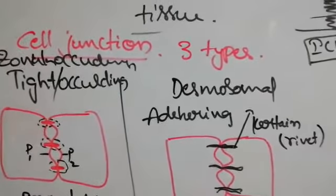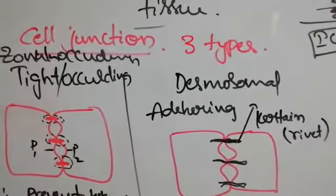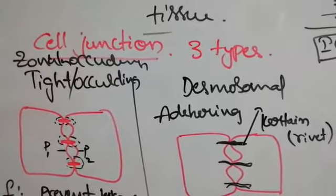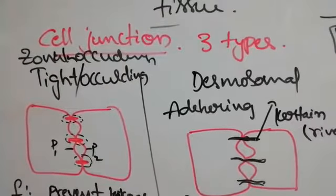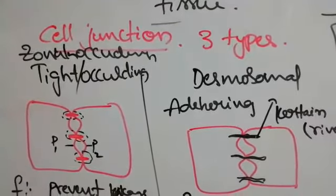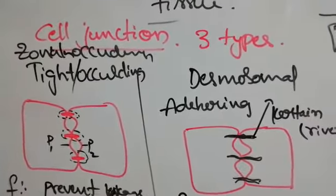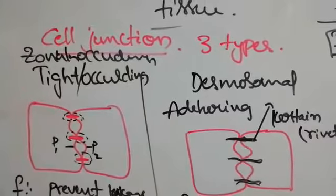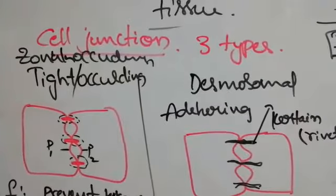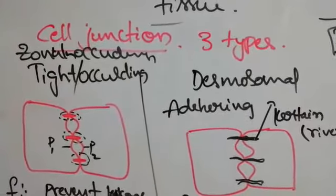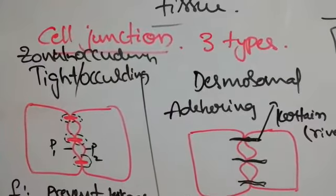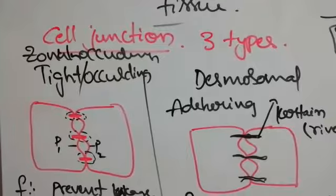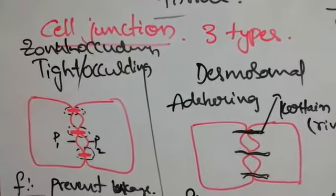In our body, four types of tissues are present: epithelial tissue, connective tissue, muscular tissue, and neuron tissue.